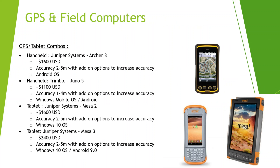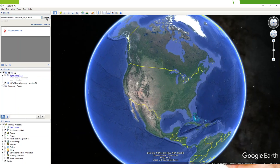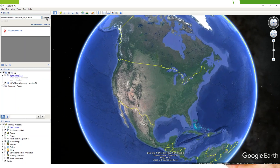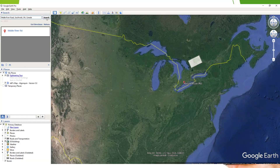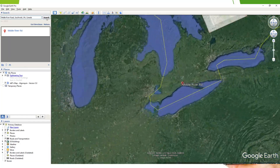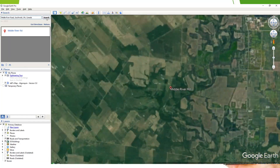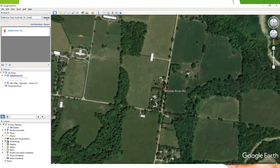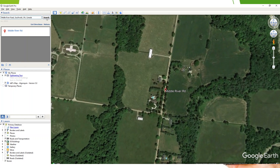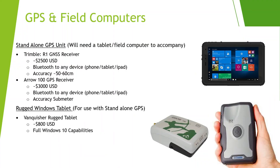If you don't have a GPS field computer or sampling software, you can use a low-tech approach to geo-referencing your sample location by using Google Earth. If you use Google Earth on your PC, you can create points and regions and navigate to those locations in-field on your phone or tablet. The types of sampling we are going to discuss today are bulk composite testing, zone sampling, and site-specific grid type sampling.